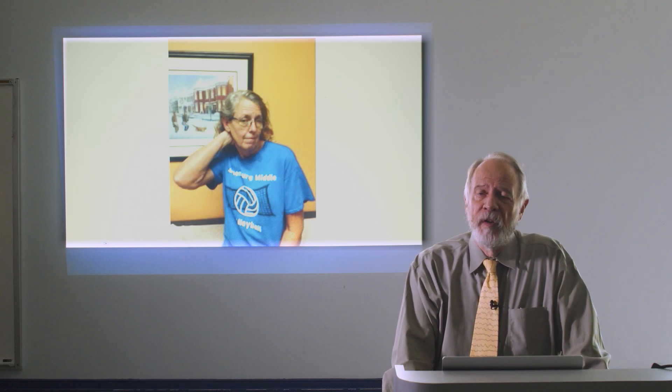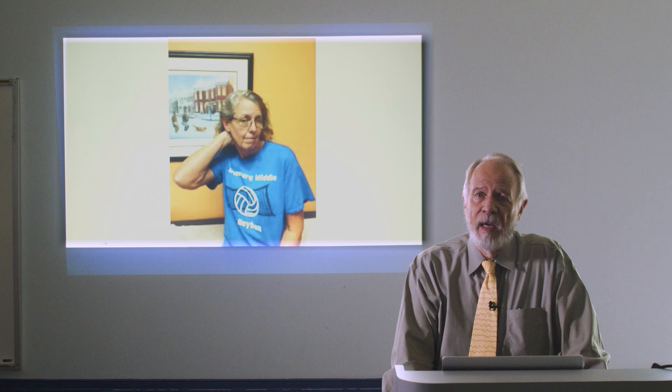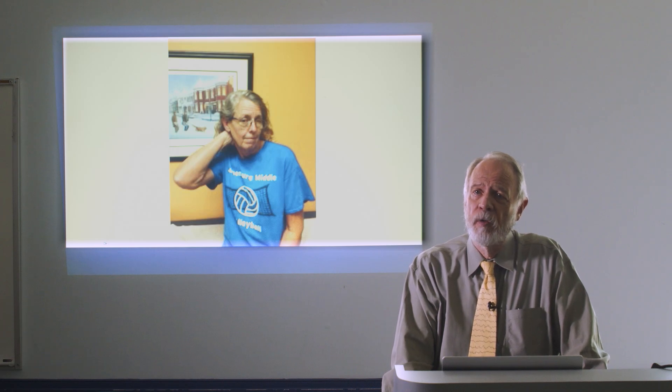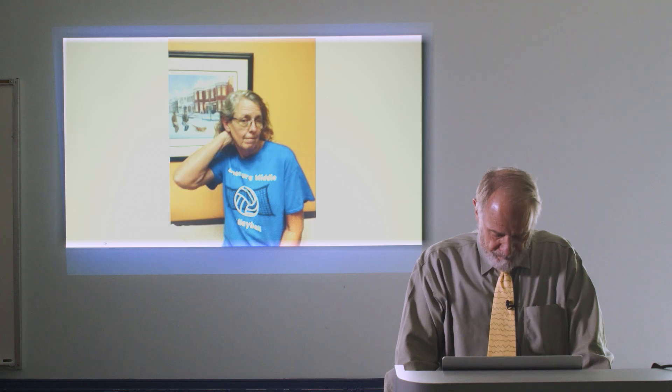The most common form of focal dystonia that we see is cervical dystonia. In cervical dystonia there are three different varieties. One is torticollis, which is a turning or twisting motion of the head. Then there's anterocollis, where the patient's head is flexed forward. And there's retrocollis, where the patient's head is thrown backwards.